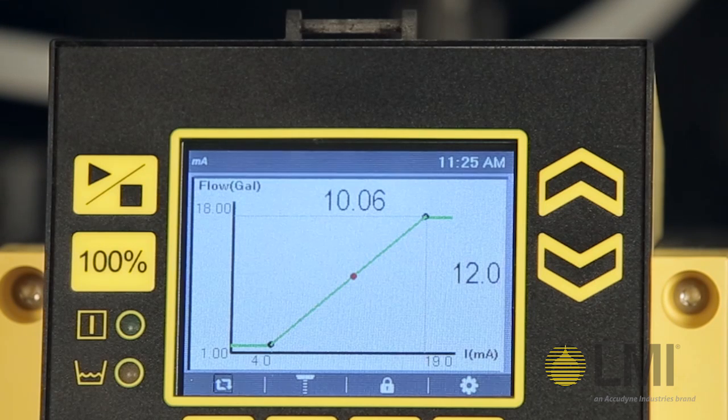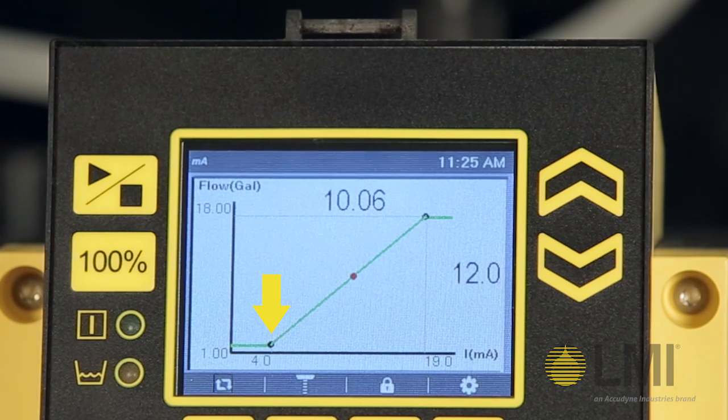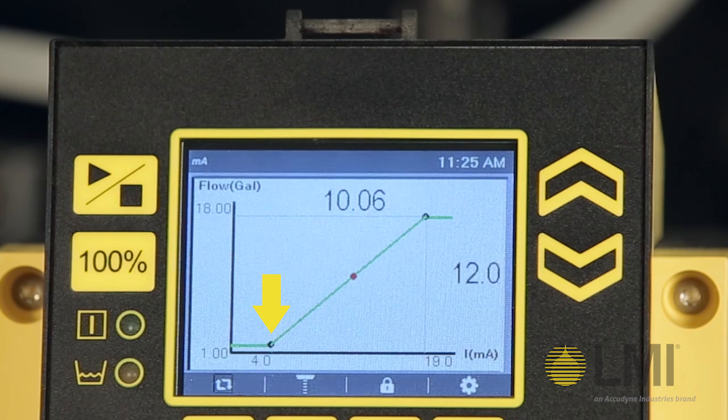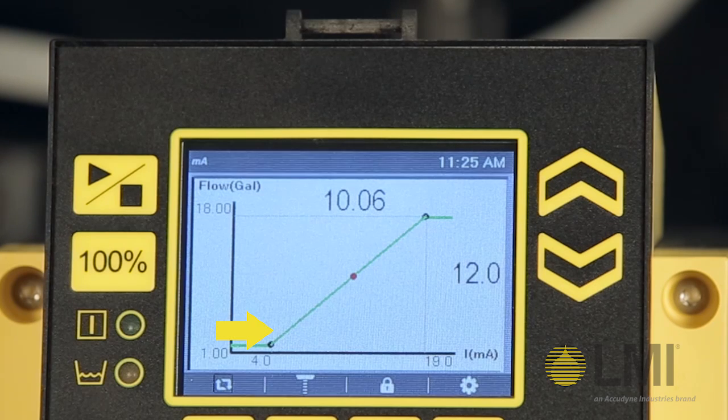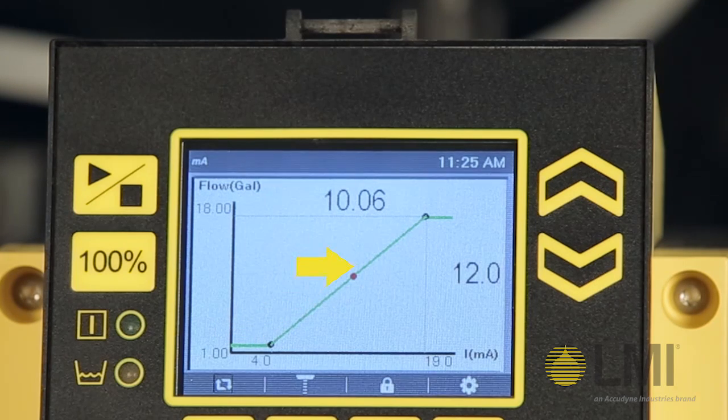Our two set points are indicated 0.1, which is set at 4 milliamps and 1 gallon per hour, and 0.2, which is set at 19 milliamps and 18 gallons per hour. Our pump will operate along this green line.